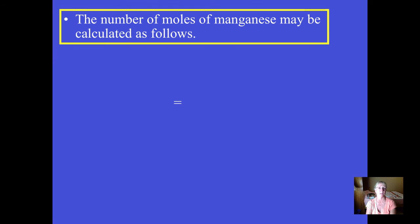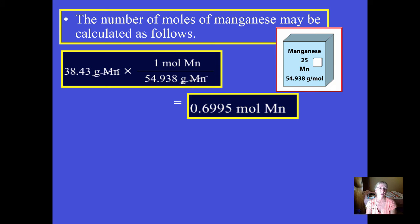I hope you have a calculator because we've got a lot of calculations to do. We take 38.43 grams of manganese and turn it into moles by multiplying by the correct conversion factor. In one mole of manganese there are 54.938 grams. If you're given grams, just divide by the molar mass. Use all the digits you see on the periodic table. Carry that number out — don't round to 0.7 — carry it to at least three or four digits: 0.6995 moles of manganese.